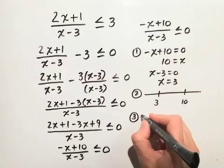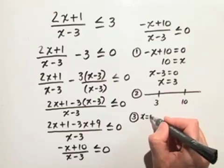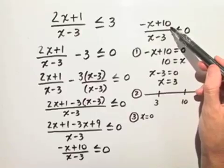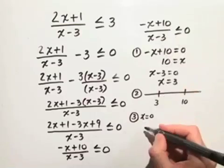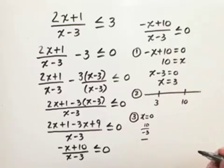So we have x equals, we can choose any number to the left of 3, let's choose 0. If we substitute 0 into negative x plus 10 over x minus 3, we'll end up with 10 over negative 3, which is a negative number.